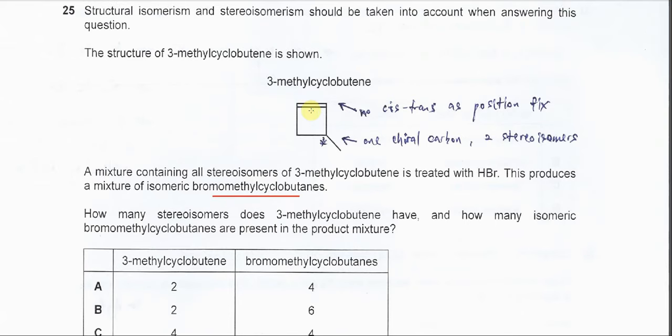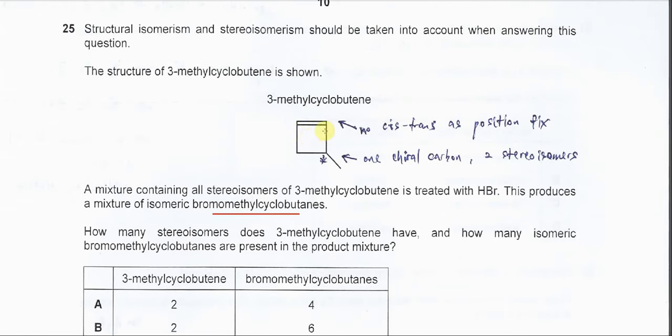This compound has a C=C double bond but it's in the ring. So this one will not form cis-trans isomers.